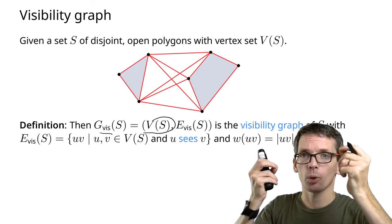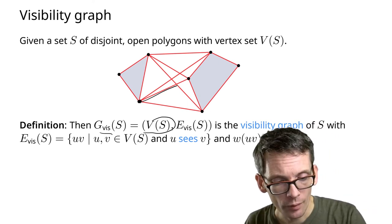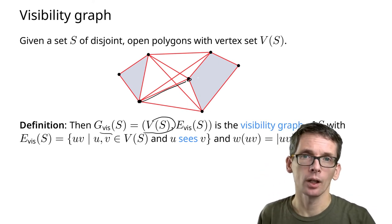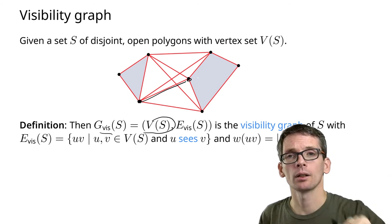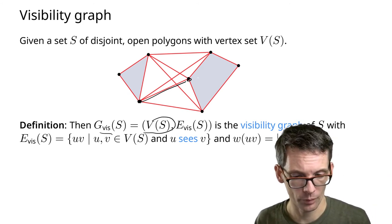See each other means that the line segment between those two does not intersect any other polygon, or any polygon.